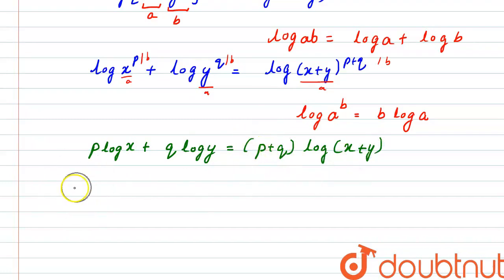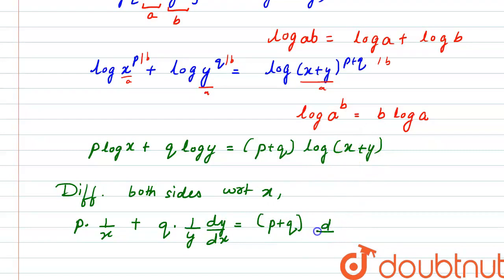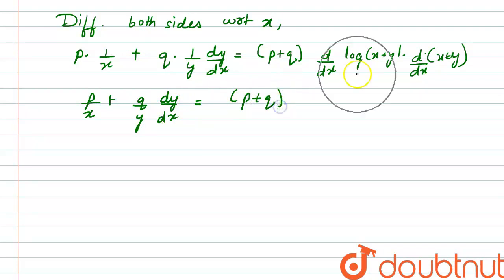Now, differentiating both sides with respect to x: p is constant, so differentiation of log(x) is 1 by x, plus q into differentiation of log(y) which is 1 by y into dy by dx. This equals p plus q is constant, and differentiation of log(x+y) gives 1 divided by (x+y), multiplied by 1 plus dy by dx.